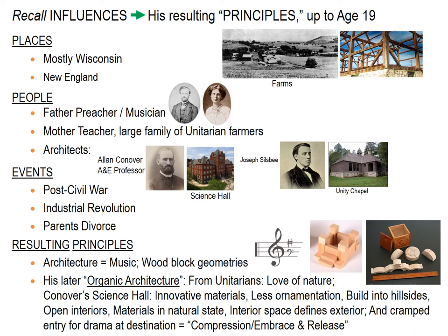The main influences until age 19 were Wisconsin and a little bit of New England — his father moved around looking for preaching work. Architect mentors were Alan Conover at the University of Wisconsin science building, and Joseph Silsby Young, who worked with him on the Unity Chapel. Events included post-Civil War birth and the Industrial Revolution. Resulting principles: a love of music related to architecture, wood block geometries, Unitarian belief, love of nature, and early organic design principles.